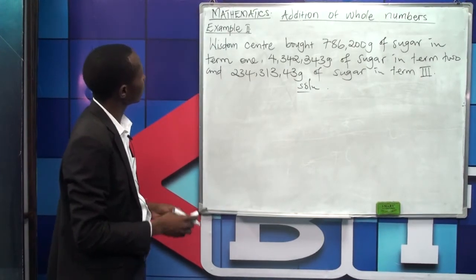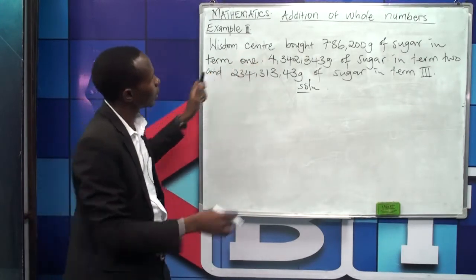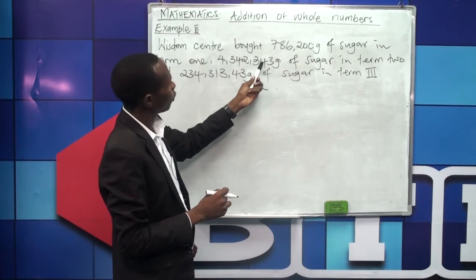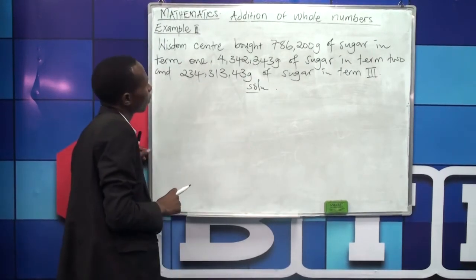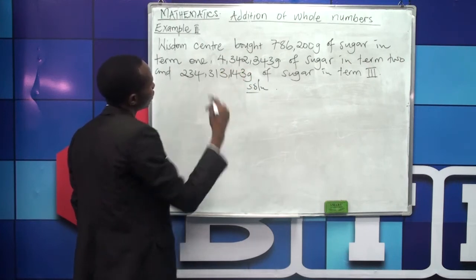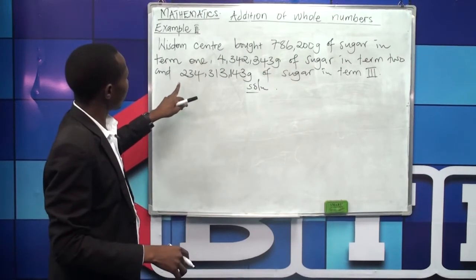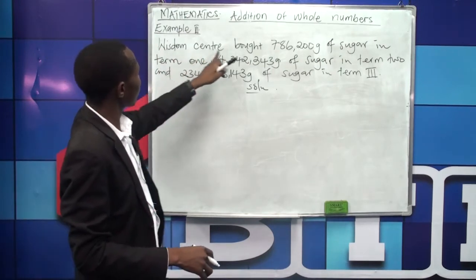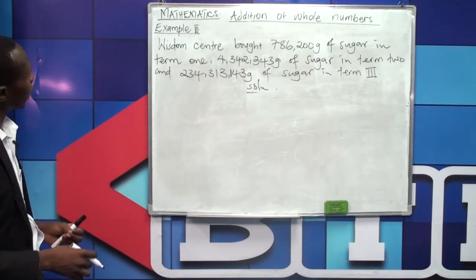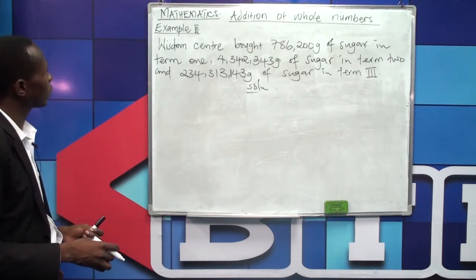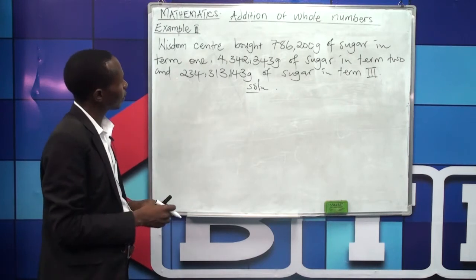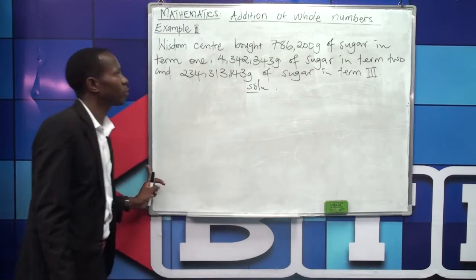Let's look at example three — my last example. It says: Wisdom School bought 780,060,200 grams of sugar in term one; 4,342,343 grams of sugar in term two; and 234,313,130 grams of sugar in term three.